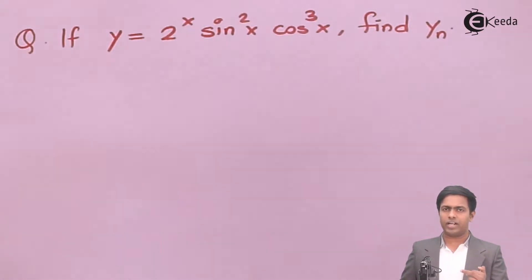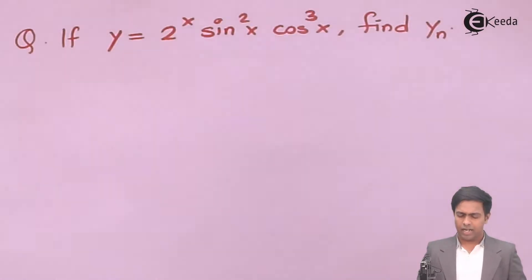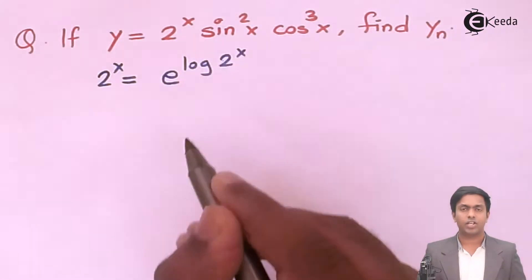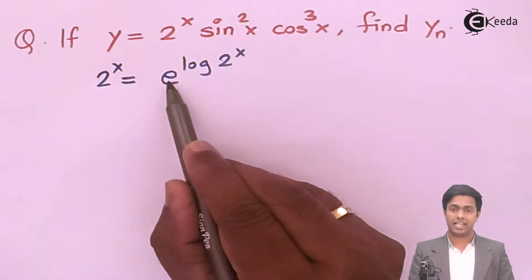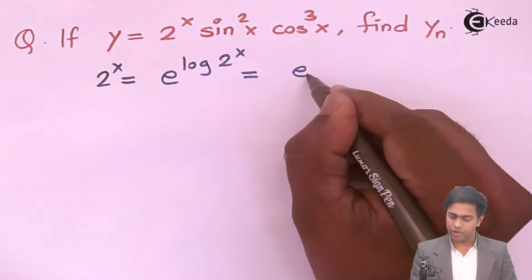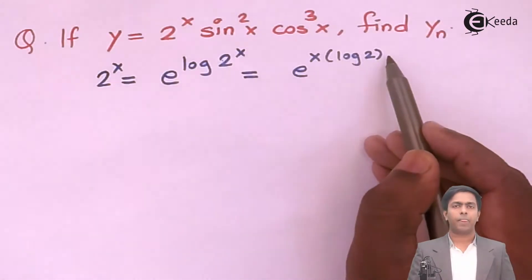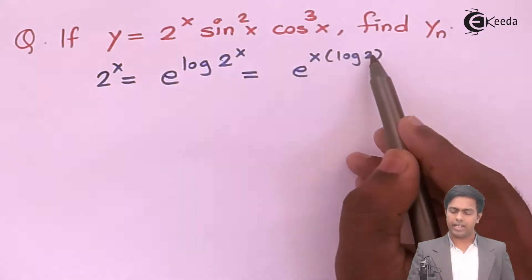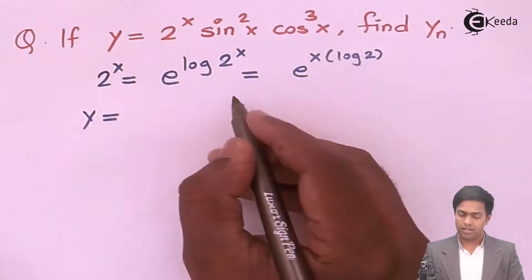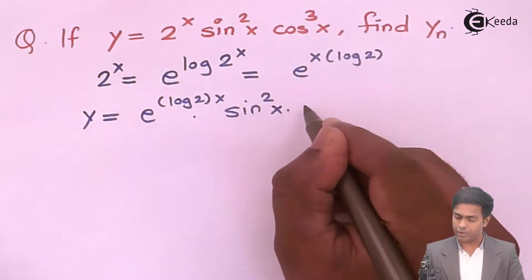If we do a few adjustments, we can find out the nth derivative of this function. I am going to convert 2 to the power x into the exponential function in the form e to the power ax. I will write 2 to the power x as e to the power log of 2 to the power x. Taking log base e, this gets cancelled and we again get 2 to the power x. Rewriting, this becomes e to the power x times log of 2, applying the logarithm property that log a to the power b is b log a. Now we have this in the form e to the power ax where a is log 2. Substituting, y equals e to the power log 2 times x, times sin square x, times cos cube x.